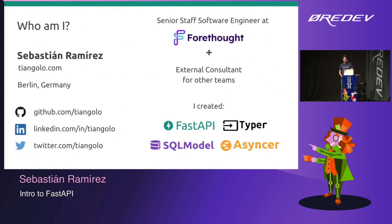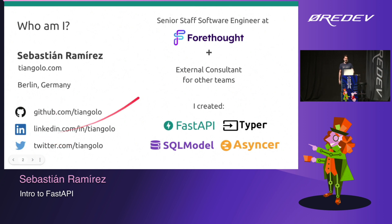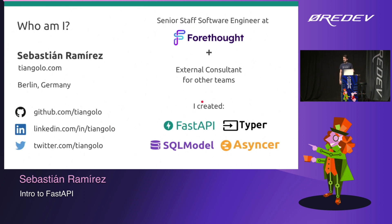First, who am I? I'm Sebastian Ramirez. I'm from Colombia in South America — that's why the accent — but I live in Berlin, Germany. You can find me on GitHub, LinkedIn, Twitter, all that stuff. I'm currently a senior staff software engineer at Forethought, which is dedicated to doing machine learning for the customer experience area. I also work as an external consultant for other companies, and I created a bunch of open source tools. And we're going to talk about FastAPI.